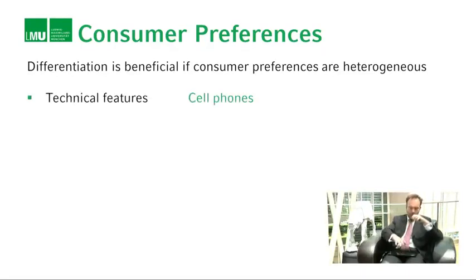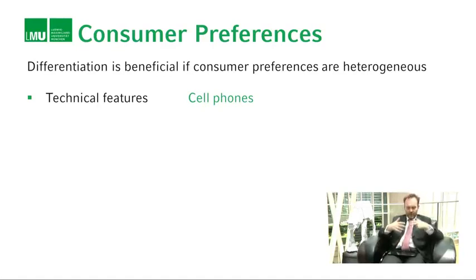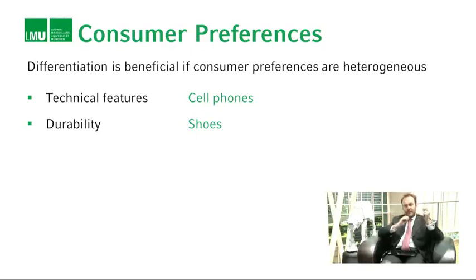So in what way can products be differentiated? Well, plenty of dimensions. Could be, for example, technical features. Cell phones have different form factors, cameras, dictaphones, and so forth — these are all technical features by which products may be different. Durability is another one: some shoes wear out very quickly, some shoes you can wear forever, and that is a way of differentiating your product.